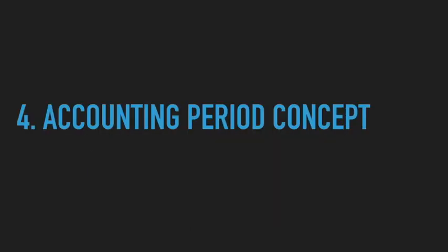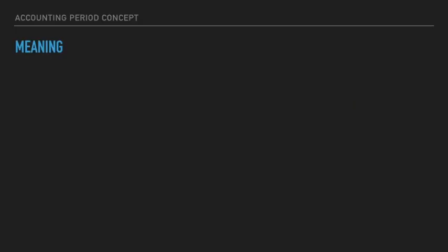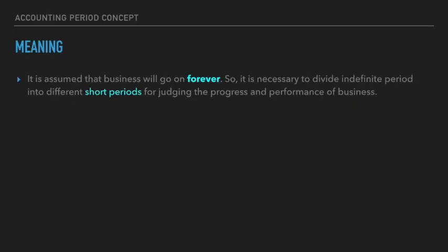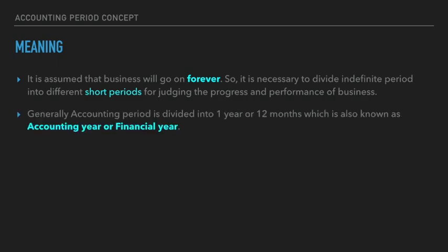The fourth concept is the accounting period concept. Since our business goes on forever for infinite years, we need to calculate its profitability. So we divide our business life into short periods to check the performance and progress of the organization. That short period is 12 months, or 1 year, and we call it the accounting year, accounting period, or financial year.